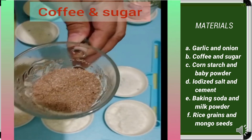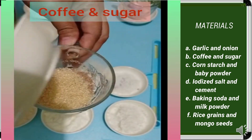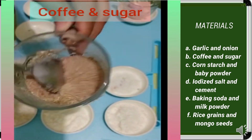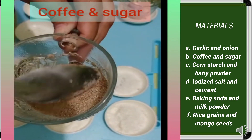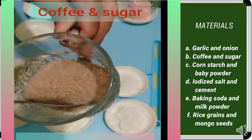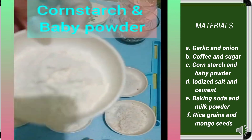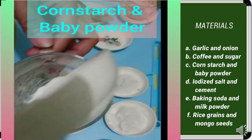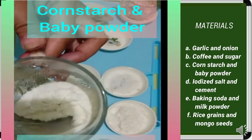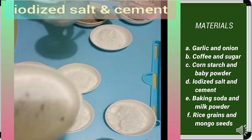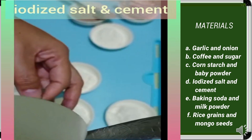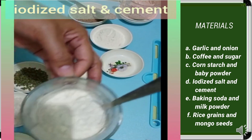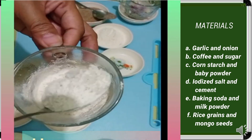Next is coffee and sugar. When we combine coffee and sugar and mix them together, we cannot distinguish coffee from sugar. This mixture is what we call a homogeneous mixture. Next, cornstarch and baby powder — also a homogeneous mixture. When mixed, they cannot be distinguished from one another. Another one is iodized salt and cement. When we mix iodized salt and cement, it cannot be distinguished from one another. This mixture is also a homogeneous mixture.